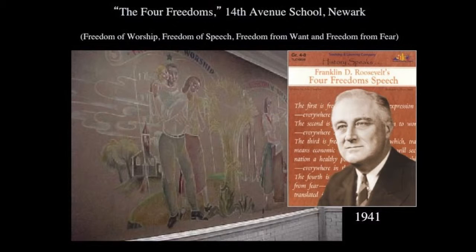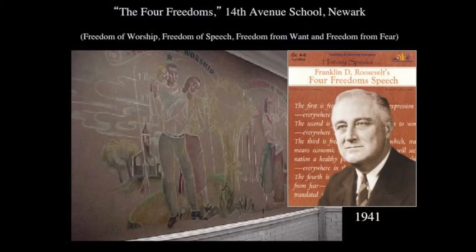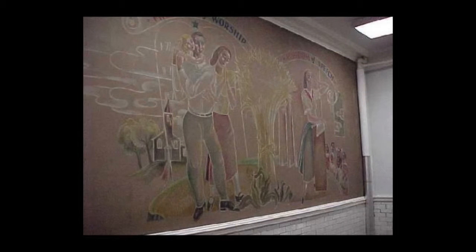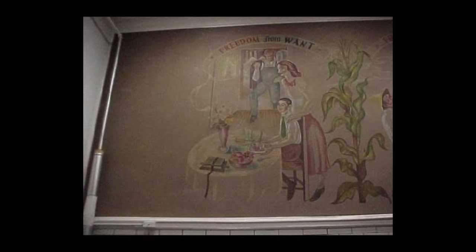Another mural in New Jersey — he did paint quite a few murals there — was for the 14th Avenue School in Newark. It is a simplified, limited color palette across two walls, each of which expresses two of the freedoms that Roosevelt had talked about in his Four Freedoms speech of 1941. We see freedom of worship with a church in the background, freedom of speech, freedom from want, and freedom from fear.